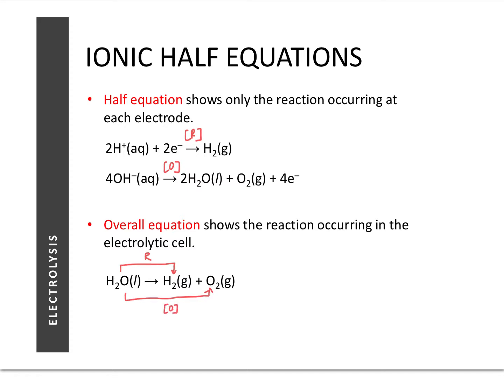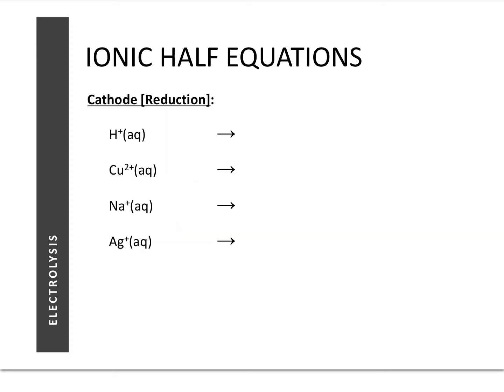There are certain points to keep in mind that will help you write half equations more easily. First, we look at the cathode — the cathode attracts cations. Some common cations we encounter in electrolysis scenarios: the hydrogen ion is reduced to hydrogen gas, and the copper(II) ion is reduced to copper metal.